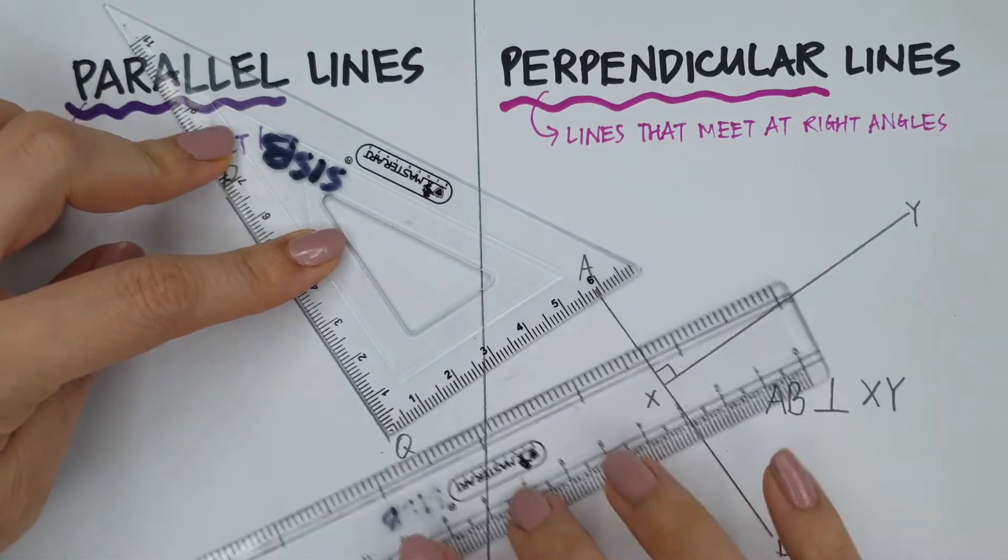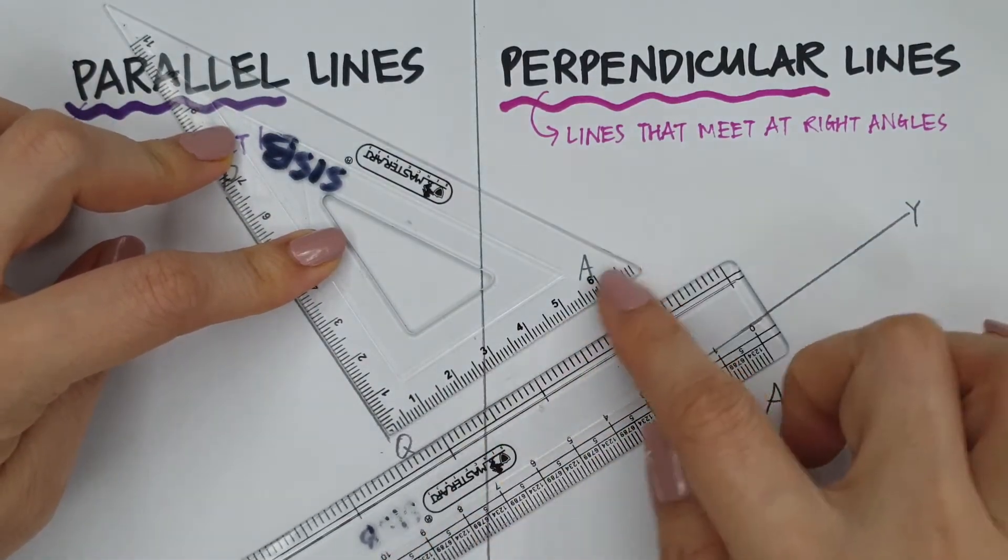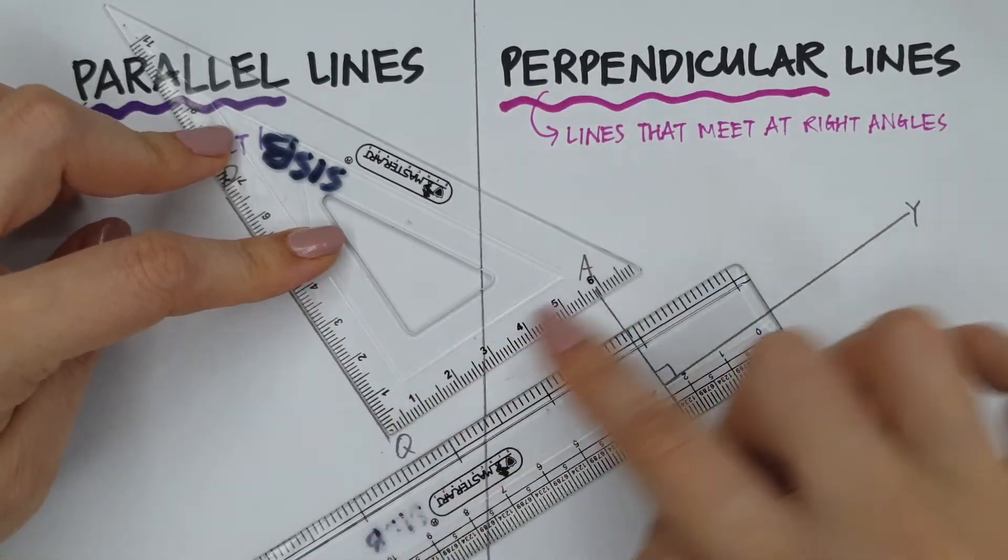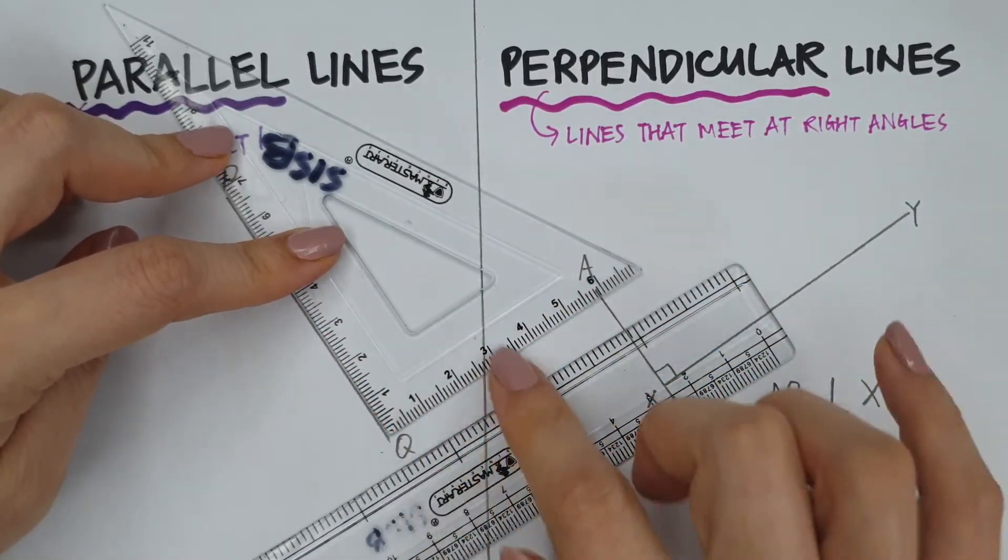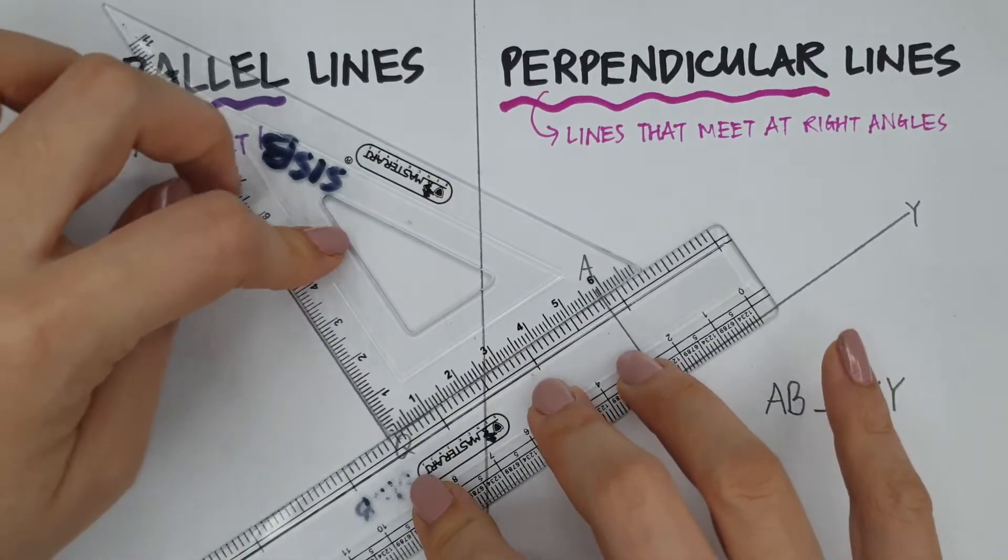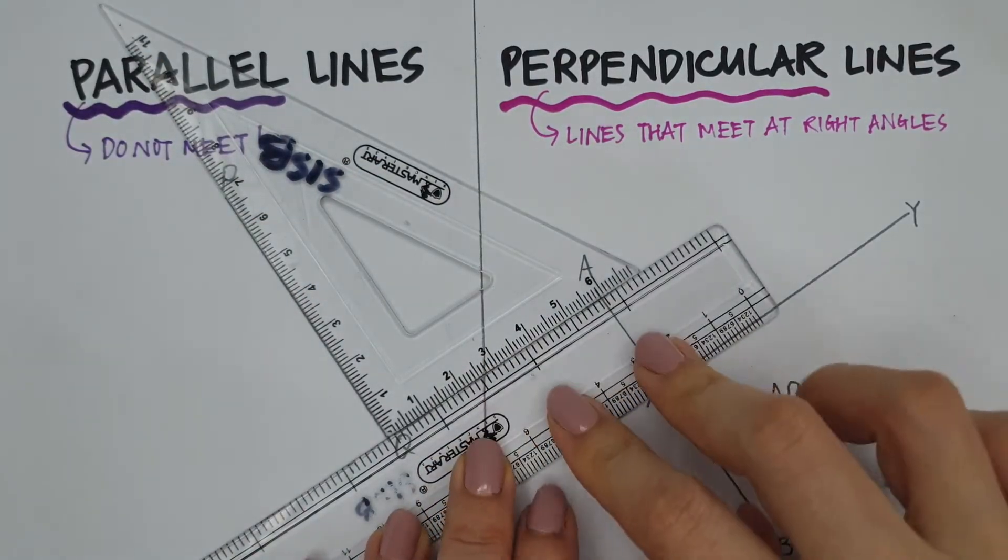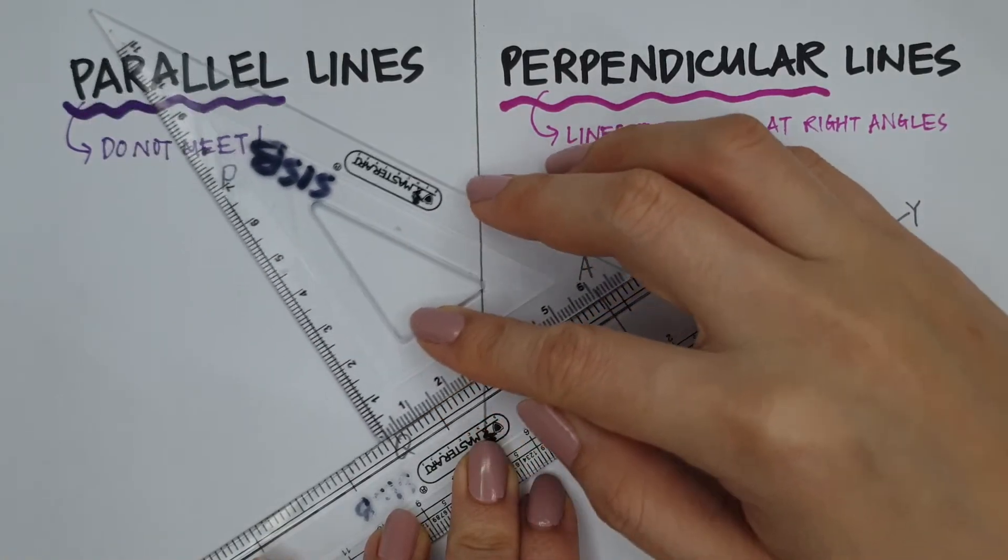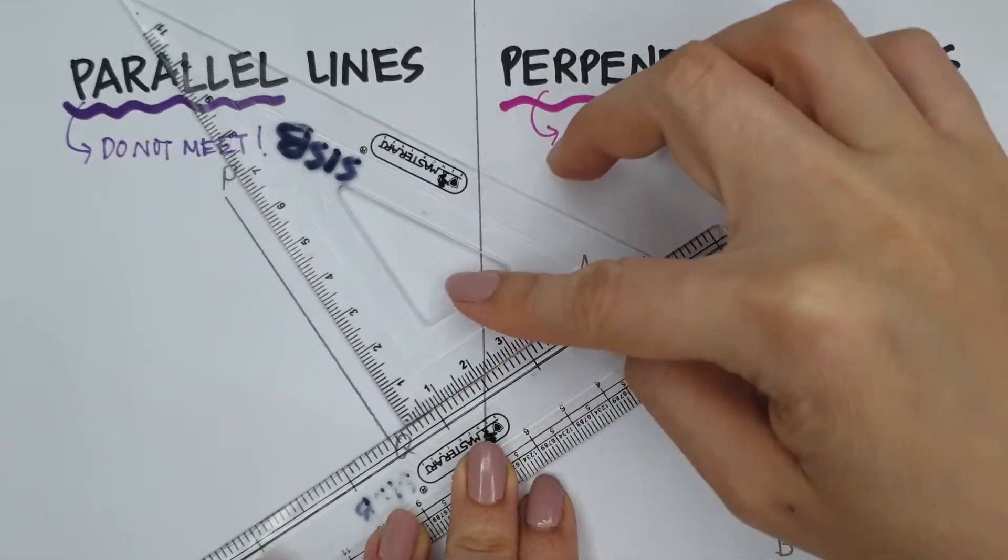Next, I'm going to put the other ruler firmly on the other side of the right angle. These two sides create the right angle there, right? So, I'm going to put the ruler on the other side. I'm going to hold this tightly. Can you see?